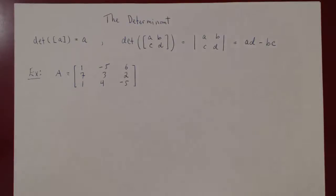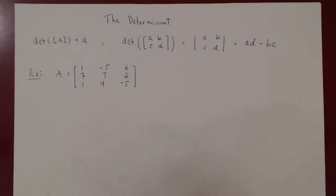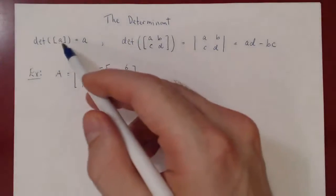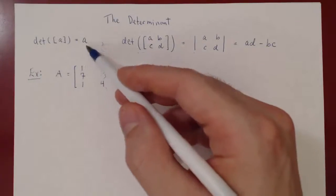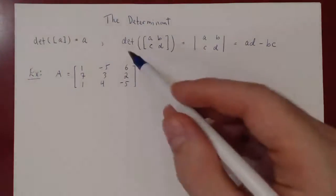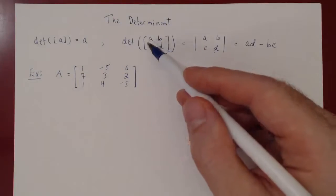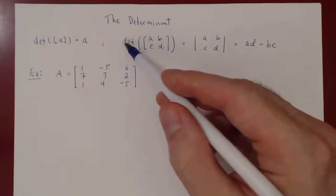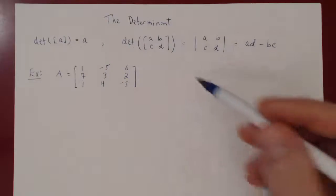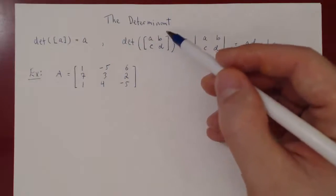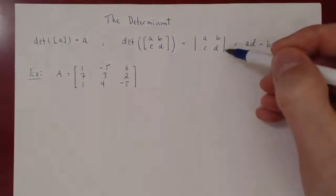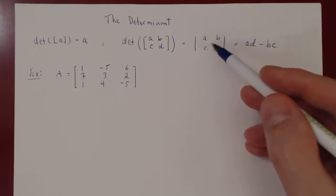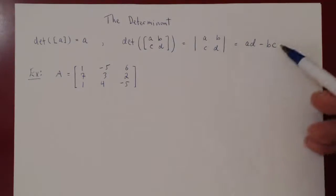We'll see how to compute the determinant of a square matrix algebraically. The determinant of a 1 by 1 matrix is simply the entry of that matrix. The determinant of a 2 by 2 matrix given by ABCD, which we can denote either with 'det' for determinant or by replacing the square brackets with vertical bars, is simply AD minus BC.